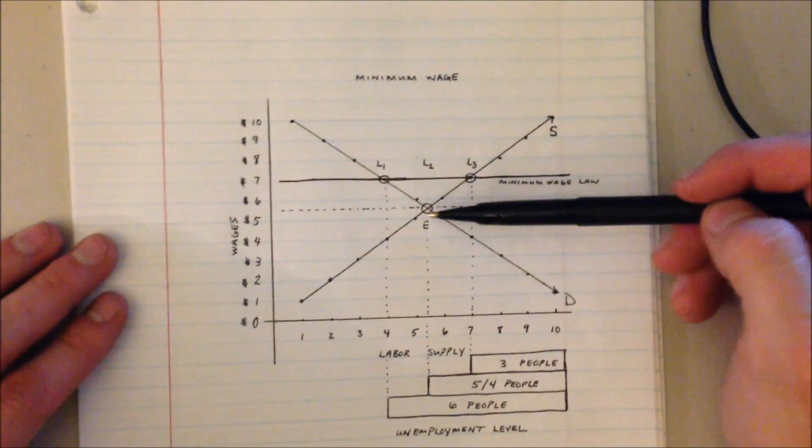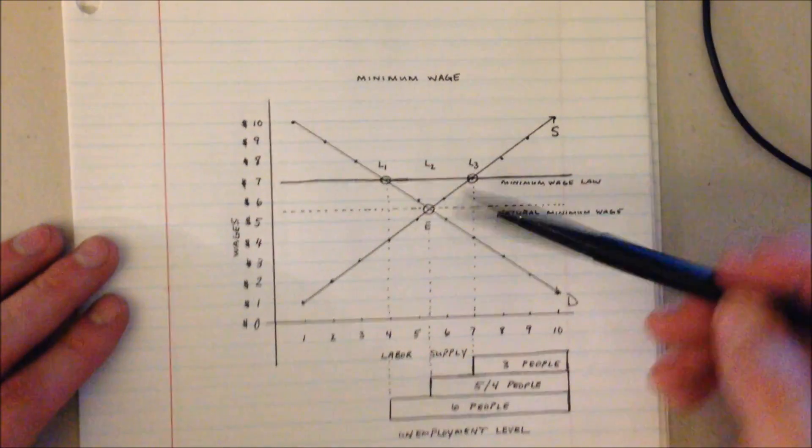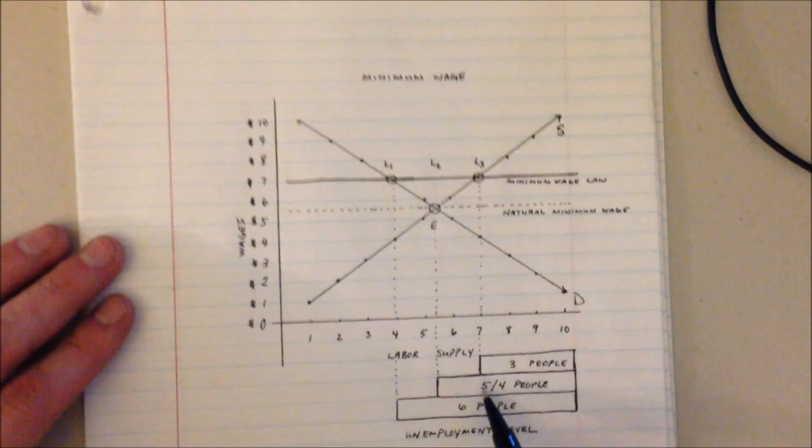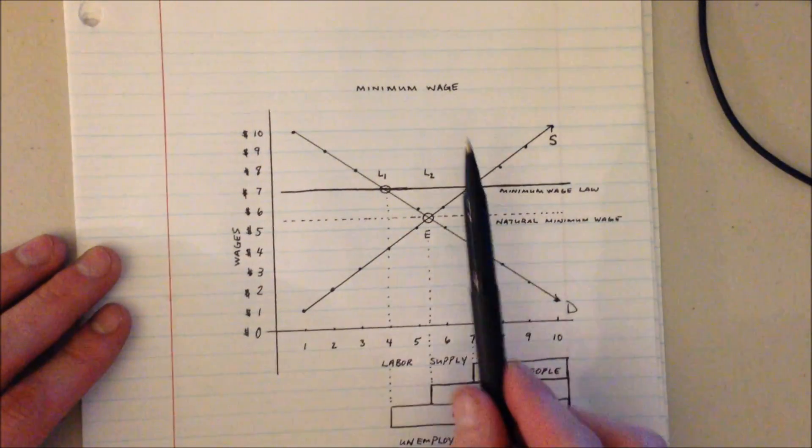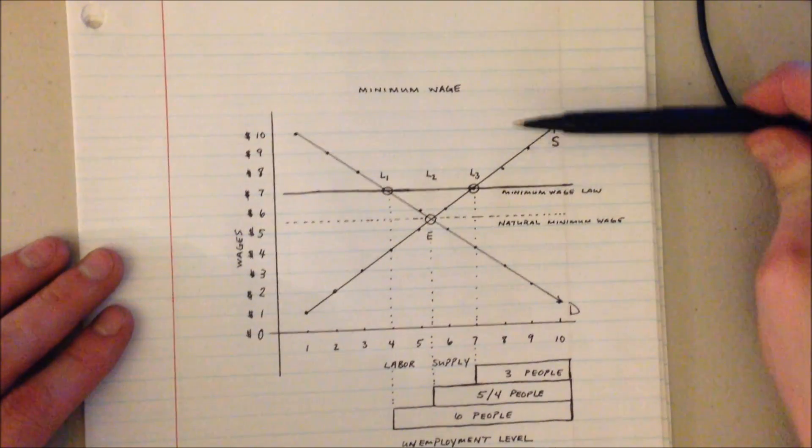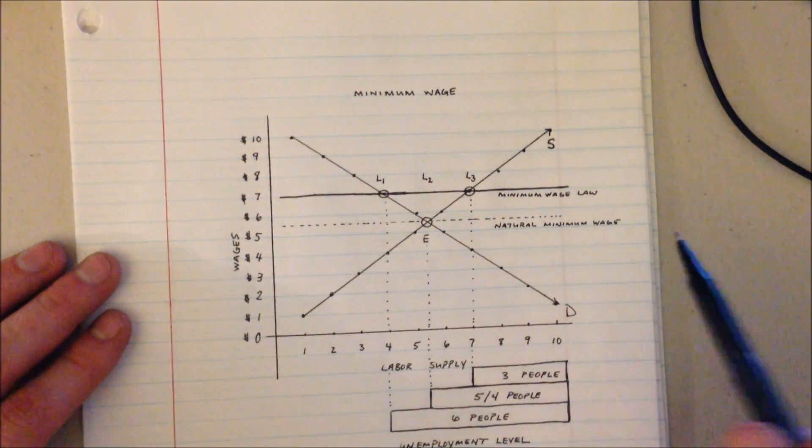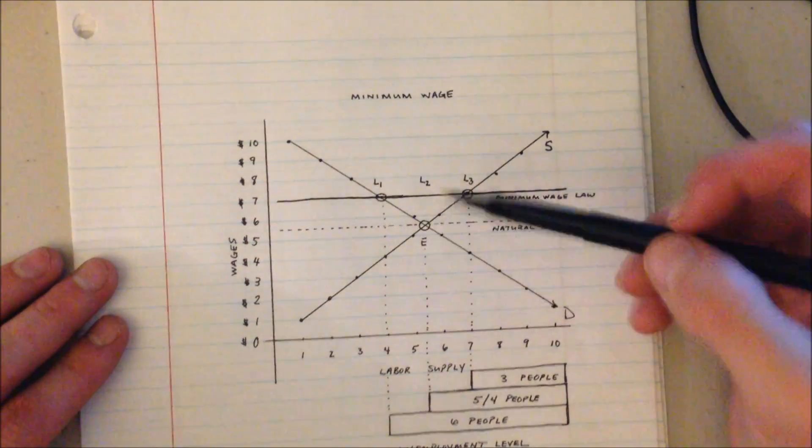At L2, our equilibrium point and our natural minimum wage, we would have 4-5 people who would say I want more money and I will not work for that wage. So 4-5 people would be unemployed at that natural minimum wage level.